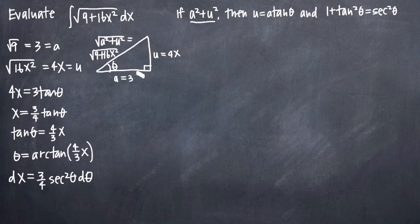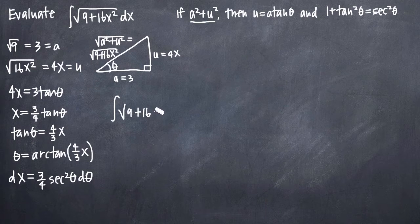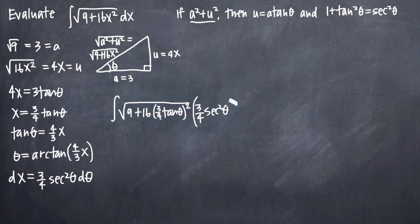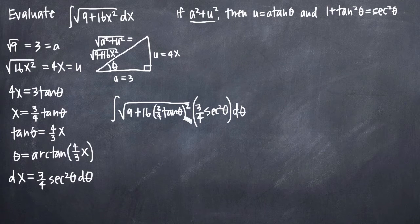Now that we have everything set up, we'll make substitutions into our integral. We substitute for x and dx, getting the integral of the square root of 9 plus 16 times (3 fourths tangent theta) squared, all multiplied by 3 fourths secant squared theta d theta. Once we've made our substitutions, the next step is to simplify this integral as much as possible until we can evaluate it. Right now we need to simplify before we can proceed.